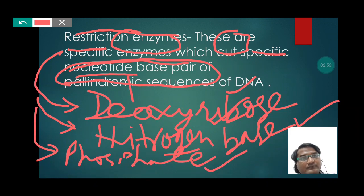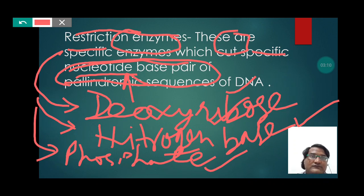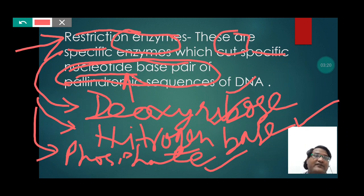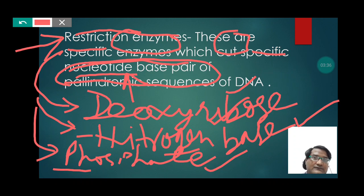These nucleotides present in DNA are cut by the restriction enzyme. So restriction enzyme is used for cutting the DNA from a particular point where the deoxyribose nucleotide base and phosphate group are present, and which has a palindromic sequence.